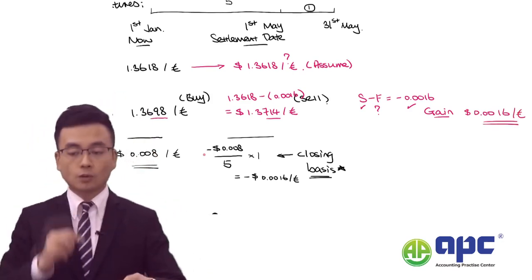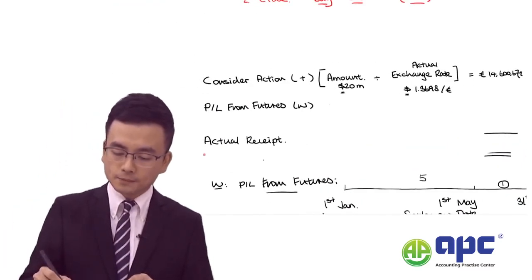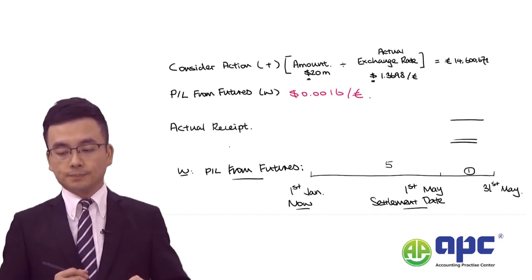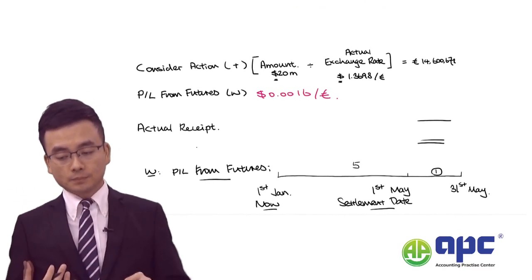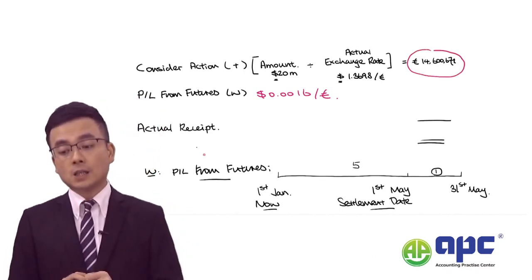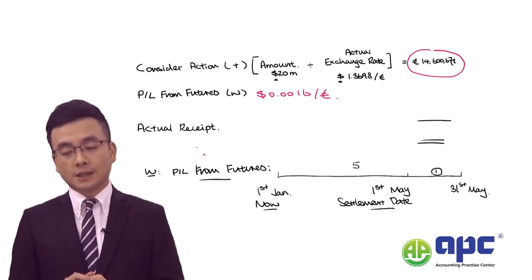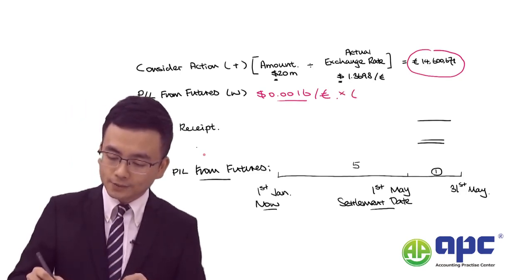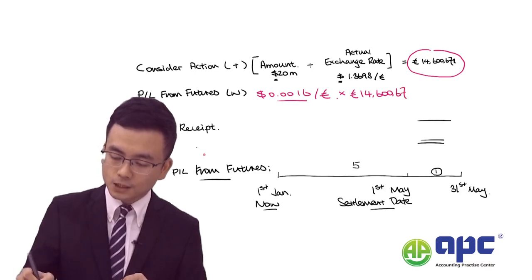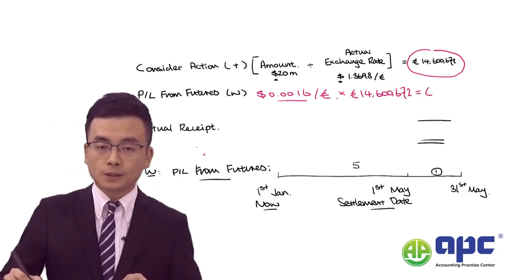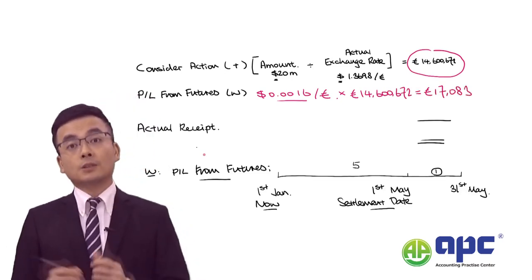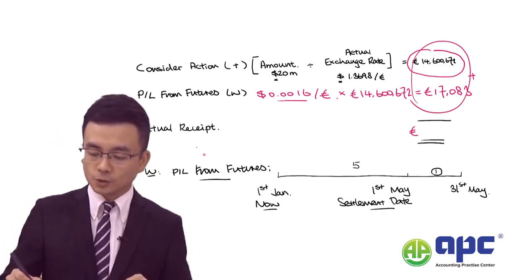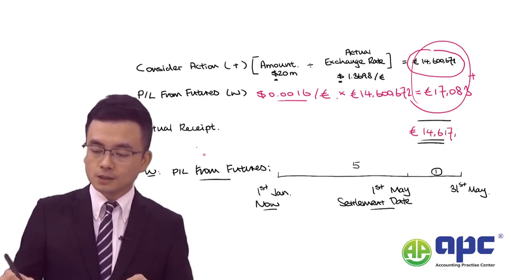For the gain, you slot the 0.0016 back. The total euros we will receive is 14.672 million, and for each euro we earn $0.0016. So multiplying them together, the total gain is $17.83. Therefore, plotting the cash market receipt and the futures gain together gives us the total actual receipt of €14,617,754.